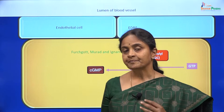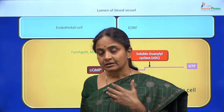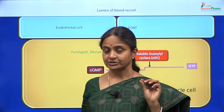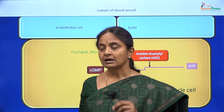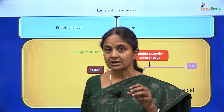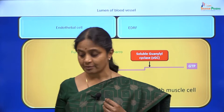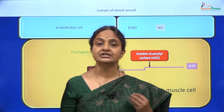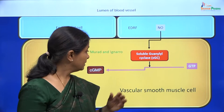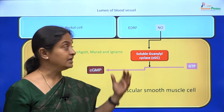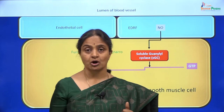Murad noticed that nitroglycerin — which is given to relieve anginal pain — was relaxing blood vessels because it increased the levels of nitric oxide in the tissue. Anginal pain is chest pain due to a spasm of coronary blood vessels, causing ischemia of the heart; this ischemia can be reversed if the coronary vessels are dilated. Ignarro then realized that nitric oxide was the same as endothelium-derived relaxing factor. So today we know that the EDRF first suggested by Furchgott is indeed nitric oxide.